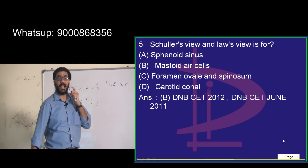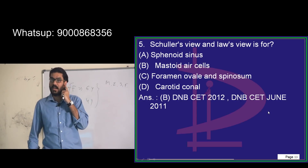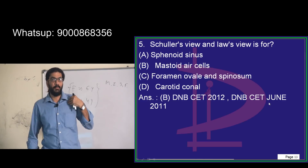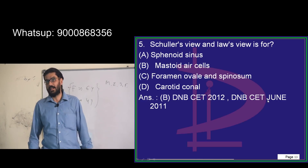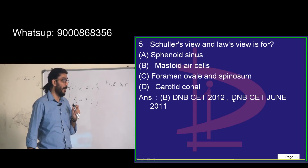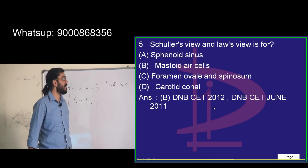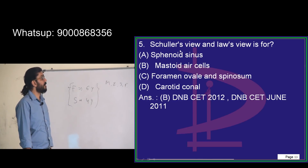Mastoid acts as a reserve for the middle ear — just as lungs are for the human body, the mastoid is for the middle ear. There is an aeration connection between them. If the mastoid has any problem, there will not be proper aeration. So the answer here is mastoid air cells.